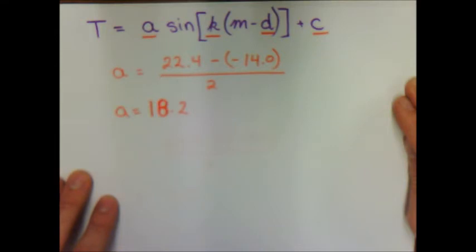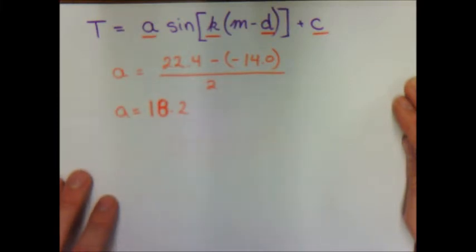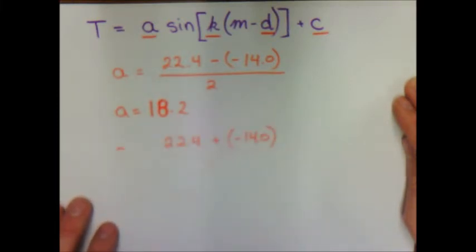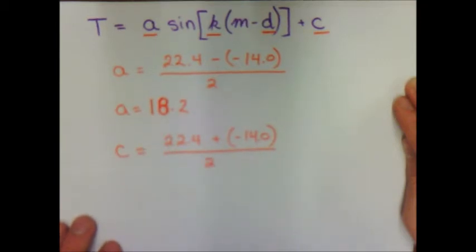Next we find the constant c, which represents the vertical translation. It is the average of the maximum and minimum temperatures: take the maximum temperature, add the minimum temperature, and divide by 2. The maximum is 22.4 degrees Celsius; adding the minimum and dividing by 2 tells me that the vertical translation constant c is 4.2.